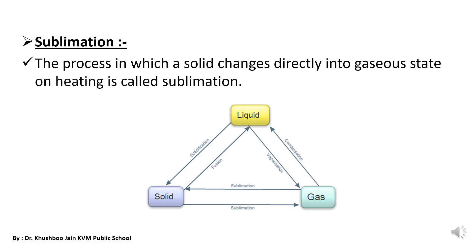The next method is sublimation. Sublimation is the process in which a solid directly changes into gaseous state on heating, without passing through the liquid state, and this process is known as sublimation. The easiest example you can see at home is naphthalene balls.